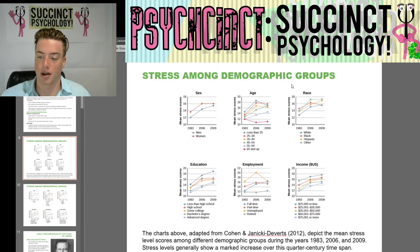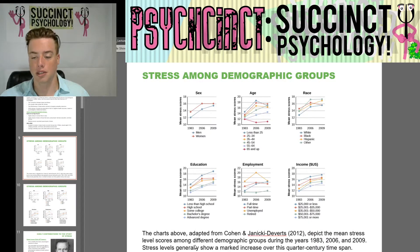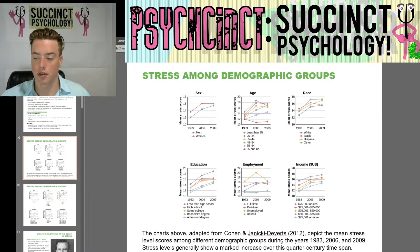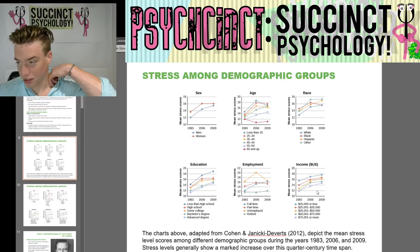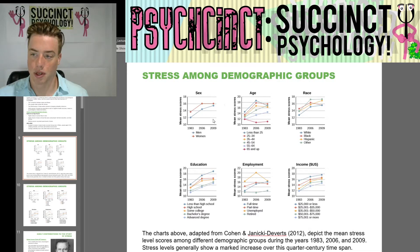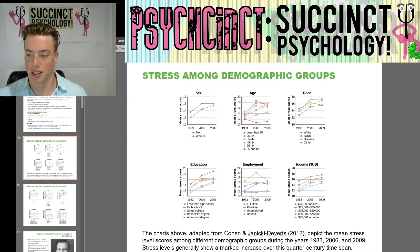The charts, adapted from Cohen and Janicki-Deverts in 2012, depict mean stress level scores among different demographic groups during the years 1983, 2006, and 2009. Stress levels generally show a marked increase over this quarter-century time span. The categories include sex, age, race, education, employment, and income. As you go up, the mean stress score increases over time — men became more stressed, and so did women. Retired people had the lowest amount of stress. Most categories show stress going up, except for unemployed, which actually went down around 2006.